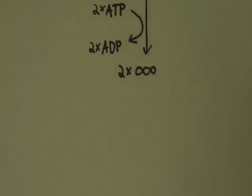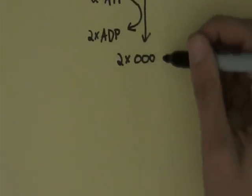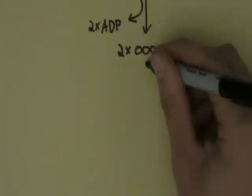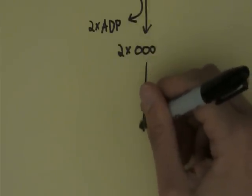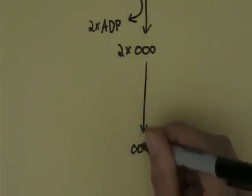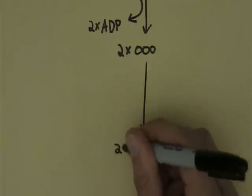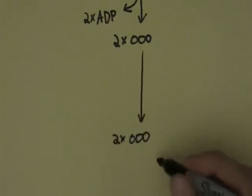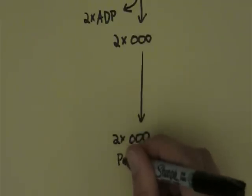You don't need to know the name of this three-carbon intermediary, but know that this goes through a series of other reactions to form a different three-carbon molecule. Two of these, and you do need to know the name of these, are pyruvate molecules.